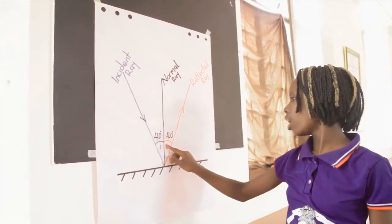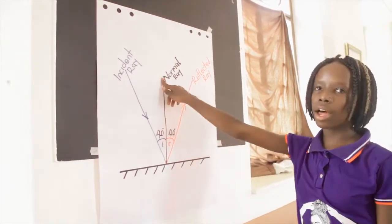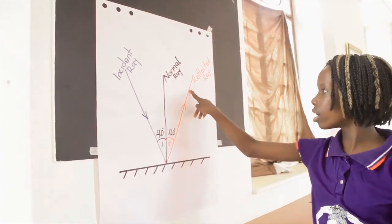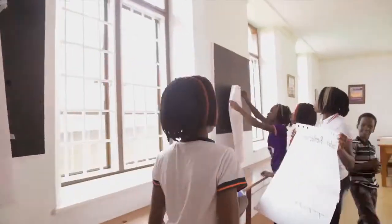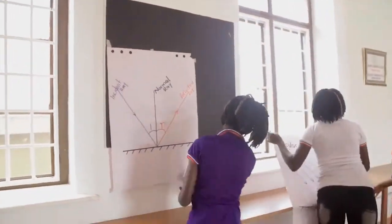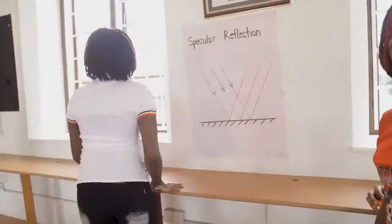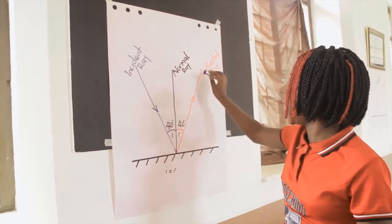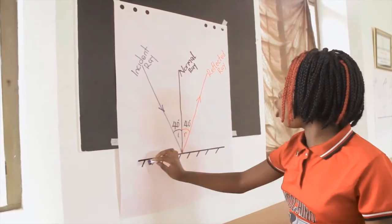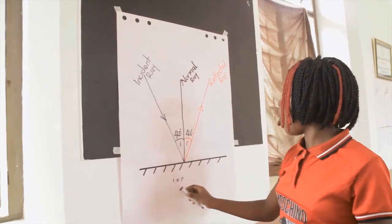The angle of reflection is the angle between the normal and the reflected ray. The incident ray, the reflected ray, and the normal all lie in the same plane.